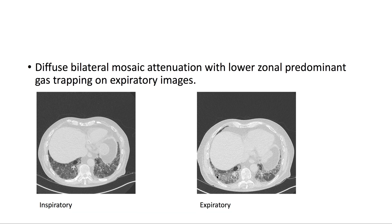Going back to our patient, we note that there's diffuse bilateral mosaic attenuation, and there's lower zonal predominant gas trapping on expiratory images. Here on inspiration, we note this area of hypoattenuation containing air, and on expiration, we note that this same area remains hypoattenuated, confirming that there is gas trapping.